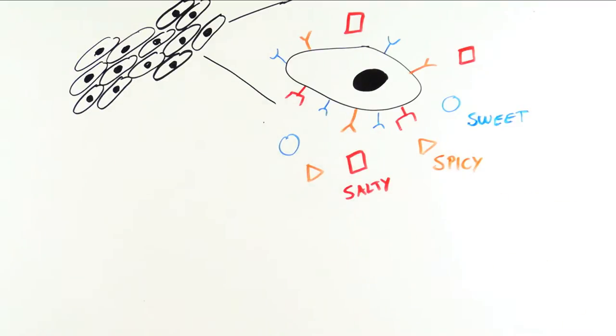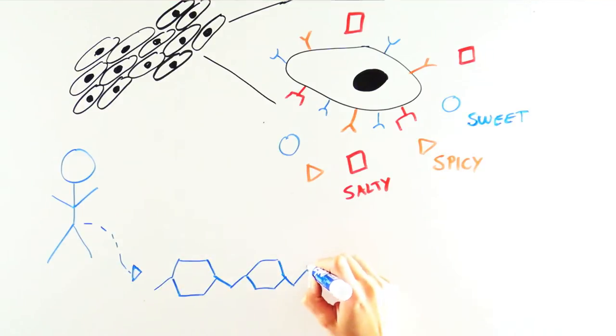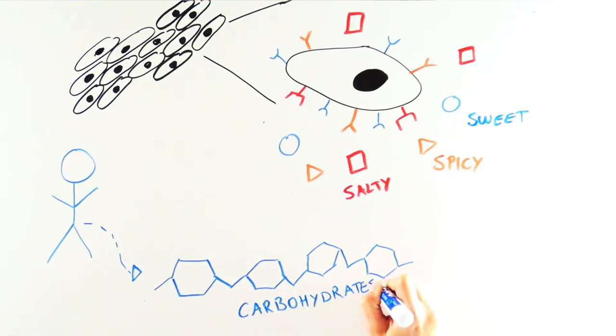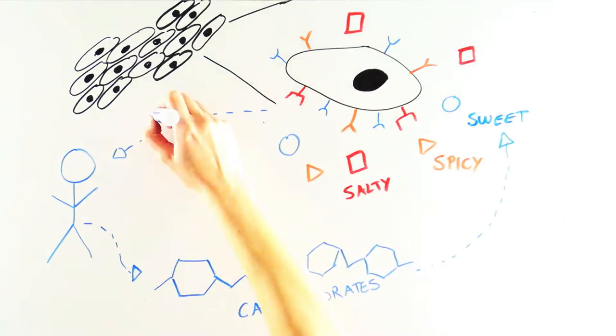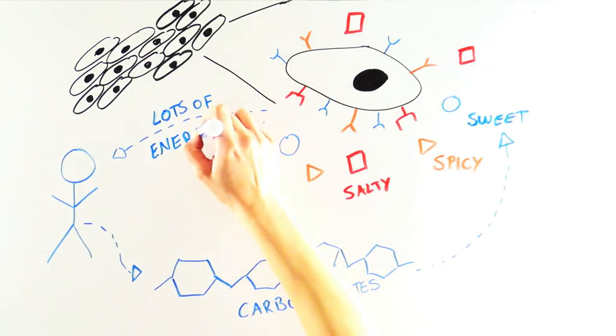We need taste receptors to identify different energy sources in our environment. For example, humans, unlike cats, have evolved to depend on carbohydrates and sugars, especially in societies where access to meat is low. And the taste of carbs is a signal to our bodies that the food in question has lots of stored energy.